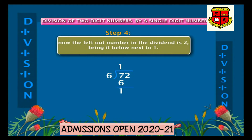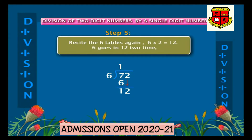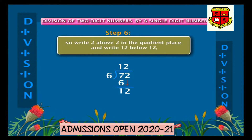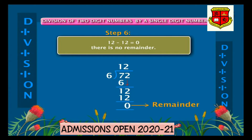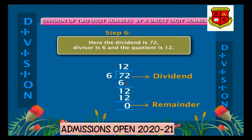The left-out number in the dividend is two. Bring it down next to one to make twelve. Recite the six times table: six into two is equal to twelve, so six goes into twelve two times. Write two above two in the quotient place and write twelve below. Twelve minus twelve is equal to zero, there is no remainder. The dividend is seventy-two, the divisor is six, and the quotient is twelve. Thus seventy-two divided by six is twelve.